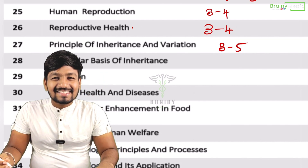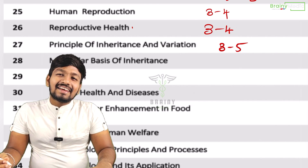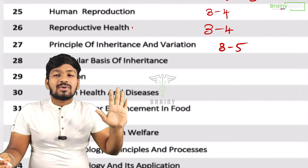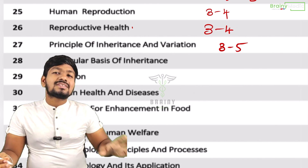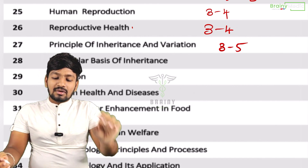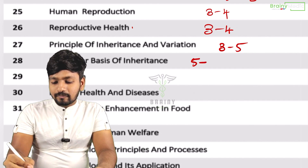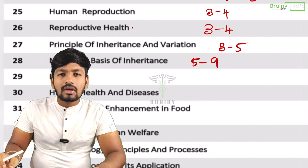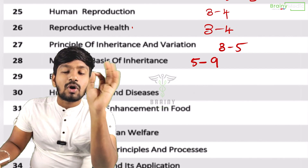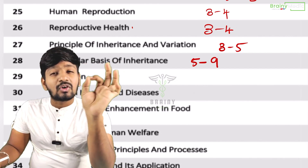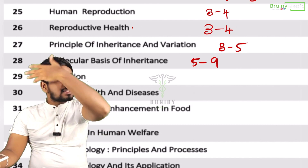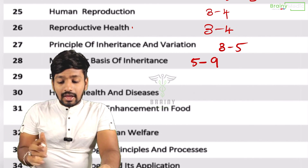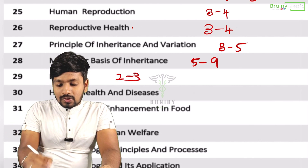Next lesson: Molecular Basis of Inheritance. This chapter has five to nine questions. Molecular Basis of Inheritance is very important — five to nine questions. Evolution: two to three questions.